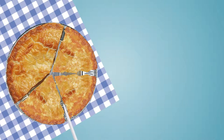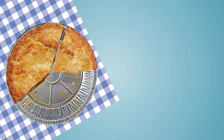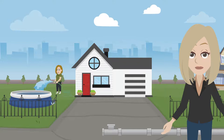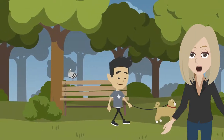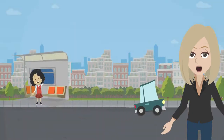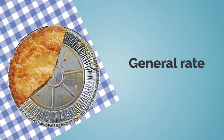Think of council's income as a funding pie. Several sources of income represent the wedges of the pie. Rates is the biggest wedge, providing about two-thirds of our total income. Within that wedge there are all sorts of rates, including those targeted to specific projects or schemes. A large part of your total rates is what we call the general rate — this is the one that changes with your property value.